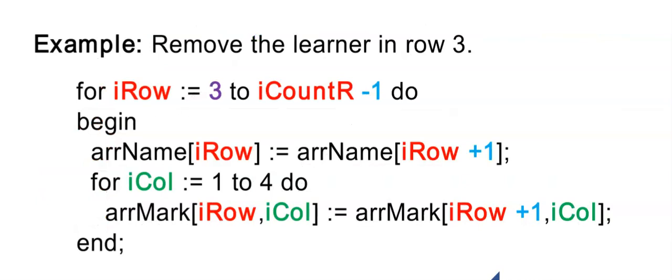Here's the code to do exactly that. So to remove a row, I want to remove row 3. I'm going to loop to iCountR minus 1. Let's say my array had space for 20 learners and I have filled the array up to 20 for the rows.